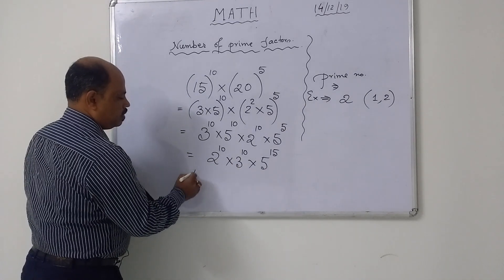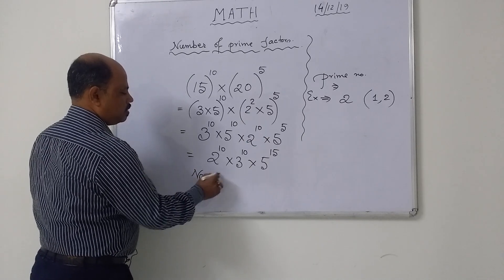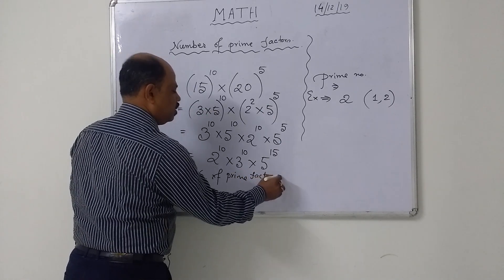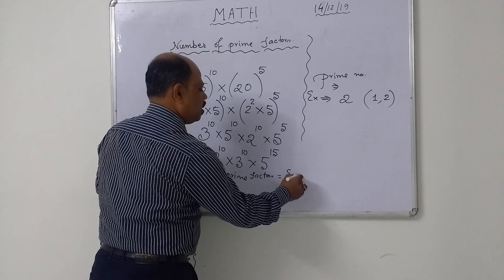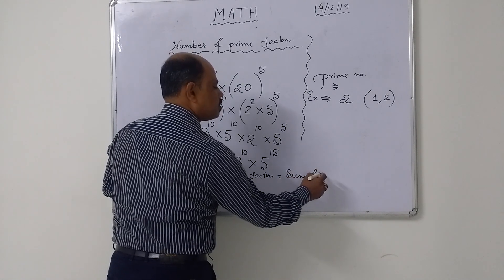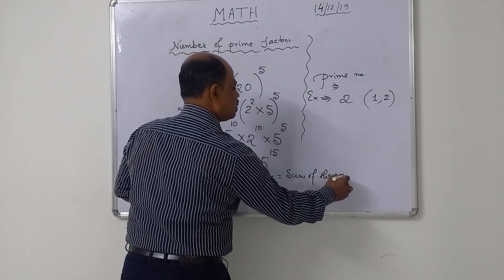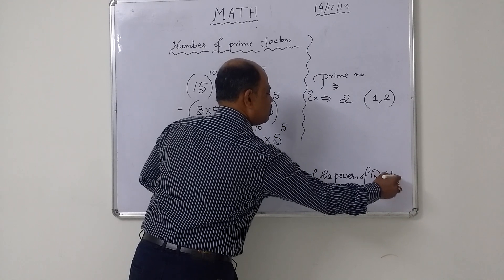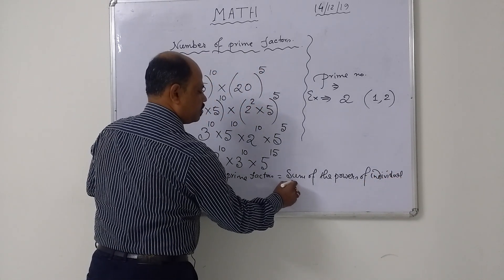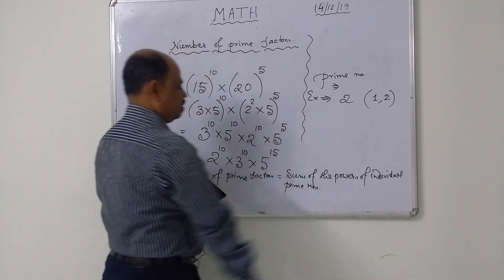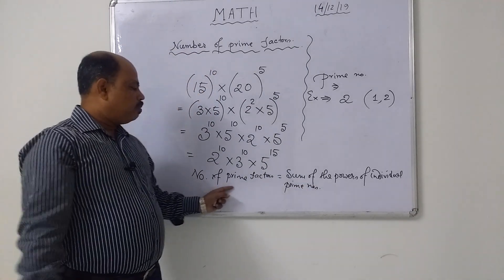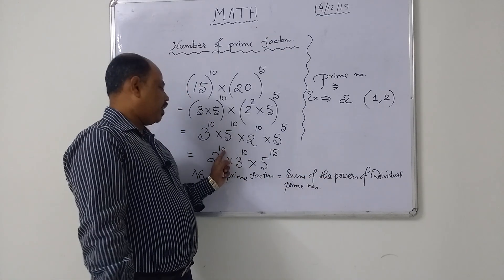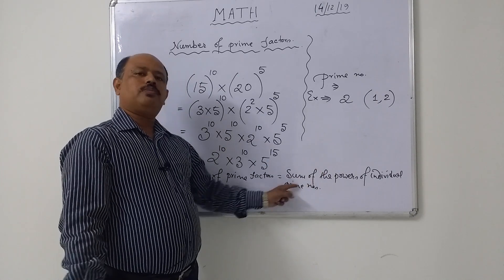When all base numbers are prime, then to find the number of prime factors, the number of prime factors is equal to the sum of the powers of each individual prime number. That means the number of prime factors equals the addition of the powers 10, 10, and 15 of each individual prime number.